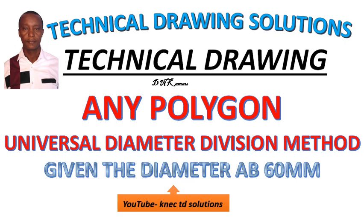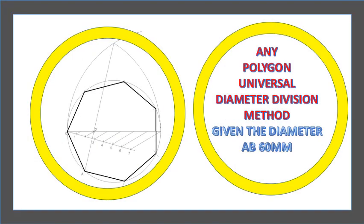Given the diameter A, B as 60. So in this case we have been given the diameter. We are given the diameter of a circle that circumscribes the polygon.